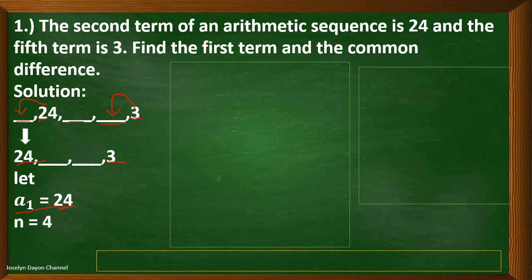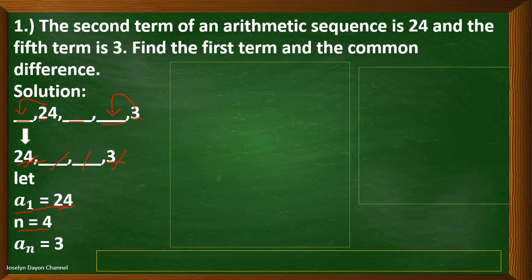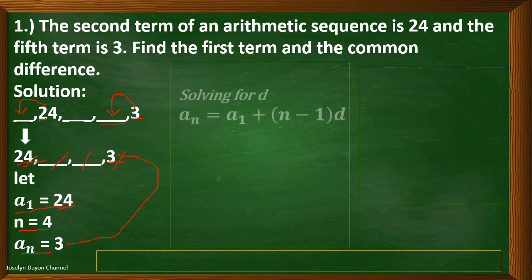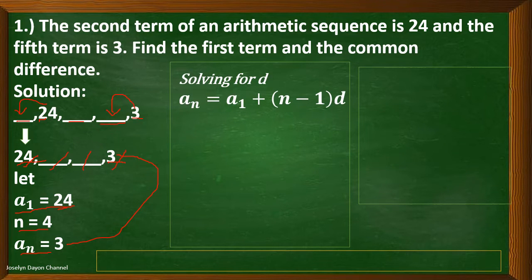n is 4 because we have 4 terms: 1, 2, 3, and 4. Lastly, we have the last term equal to 3. We are going to use the n-th term formula to solve for the common difference: a sub n equals a sub 1 plus the quantity of n minus 1 times d.